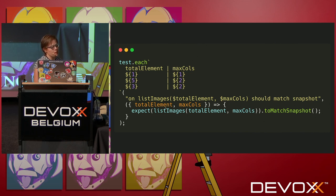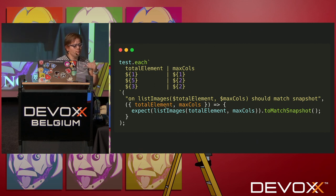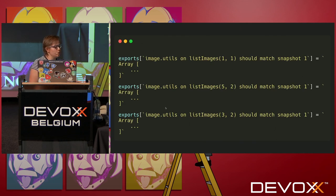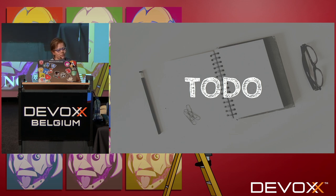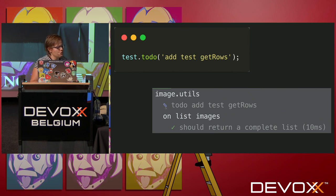We can also combine `test.each` with snapshots — it will create snapshots for each test execution. You should define unique values for your descriptor using template variables like `$totalElements` and `$totalMaxColumns`, which are taken from the table. The output is readable, showing the test name with the actual values. We also have `test.todo` — not a forgotten slide, but a way to define tests you plan to write later.